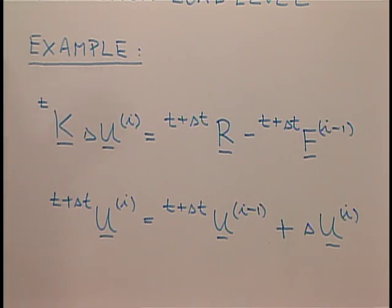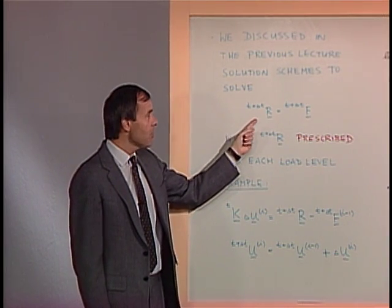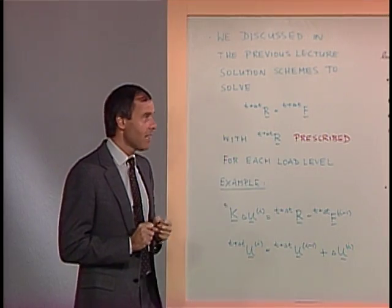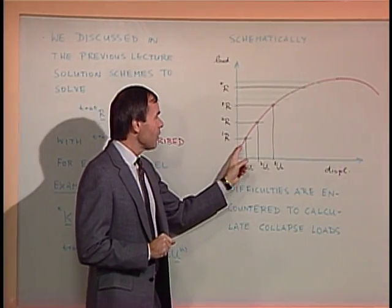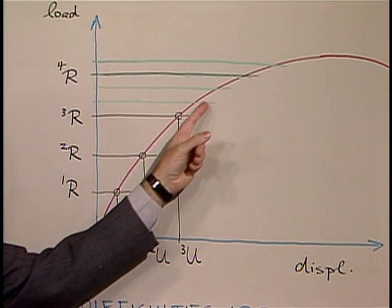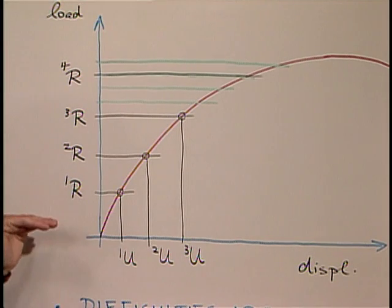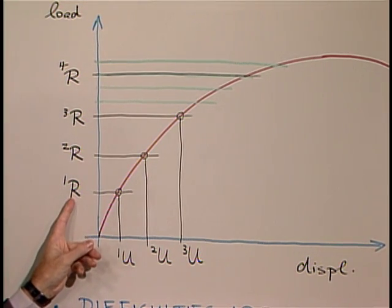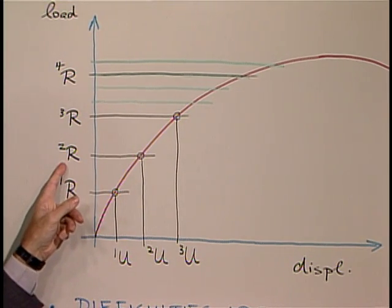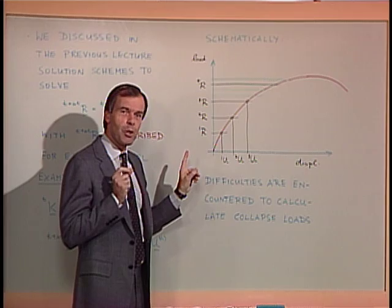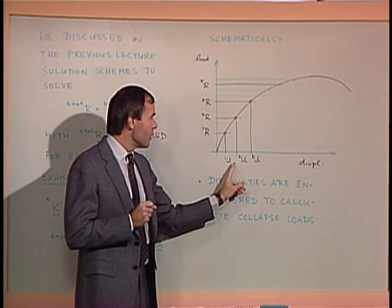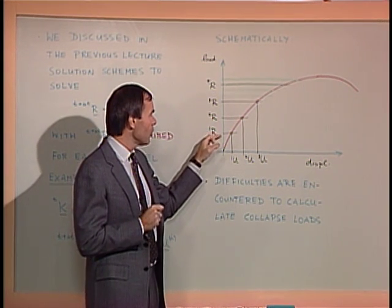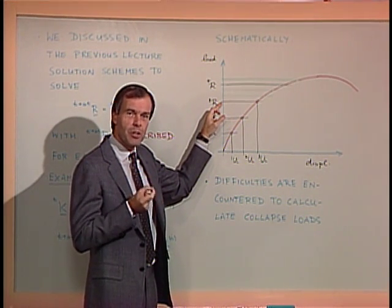A distinguishing feature of these solution techniques is that the analyst has to prescribe the externally applied load vector corresponding to all load steps. This means schematically that if you have this kind of load-displacement curve, the analyst has to prescribe prior to the analysis the load levels at which the response is sought — load level 1R for load step 1, 2R for load step 2, and so on. The corresponding solutions that the analyst is looking for are the displacements. What might very well happen in practical analysis is that the analyst chooses certain load levels, and at a particular load level, convergence difficulties are encountered.